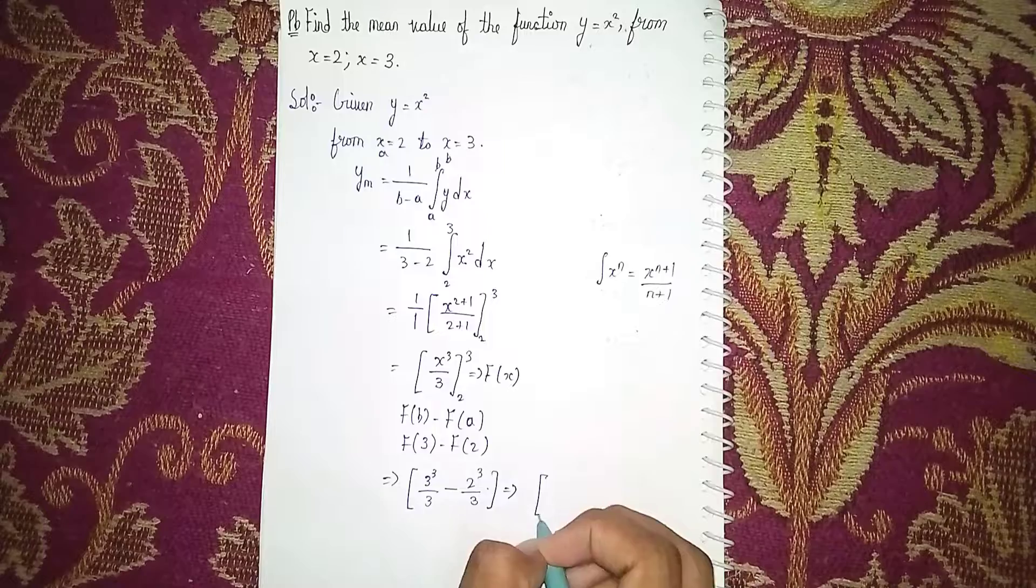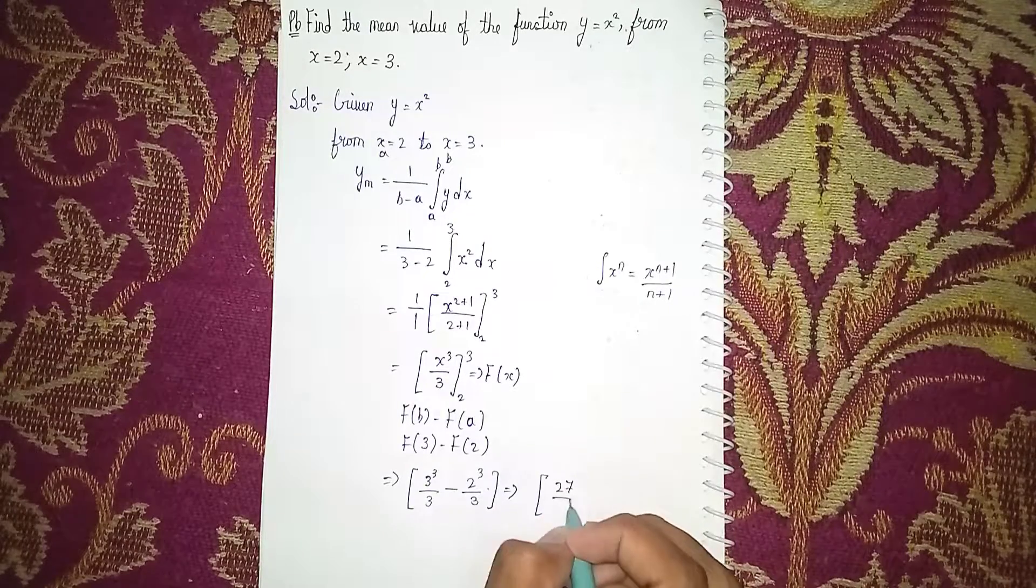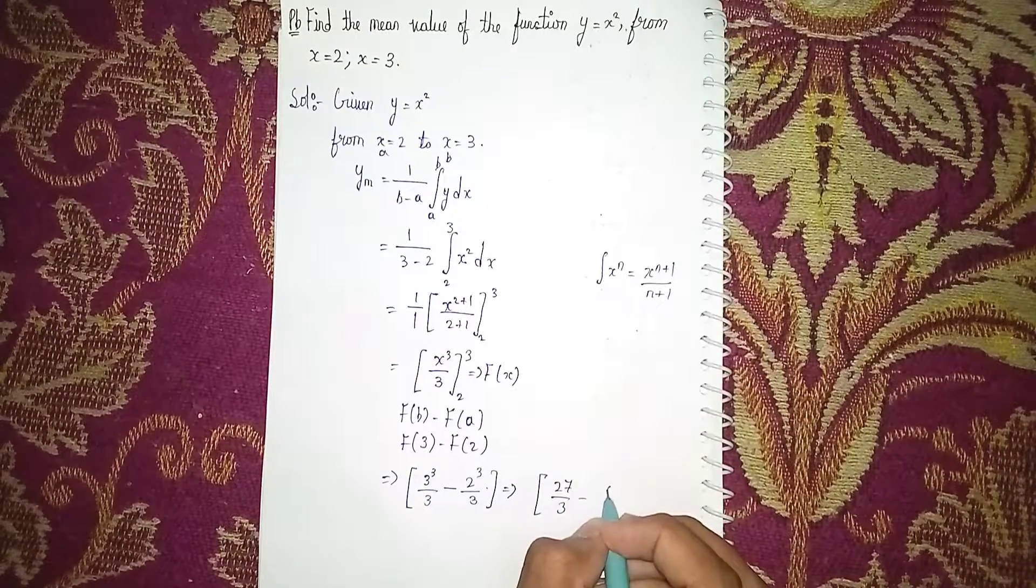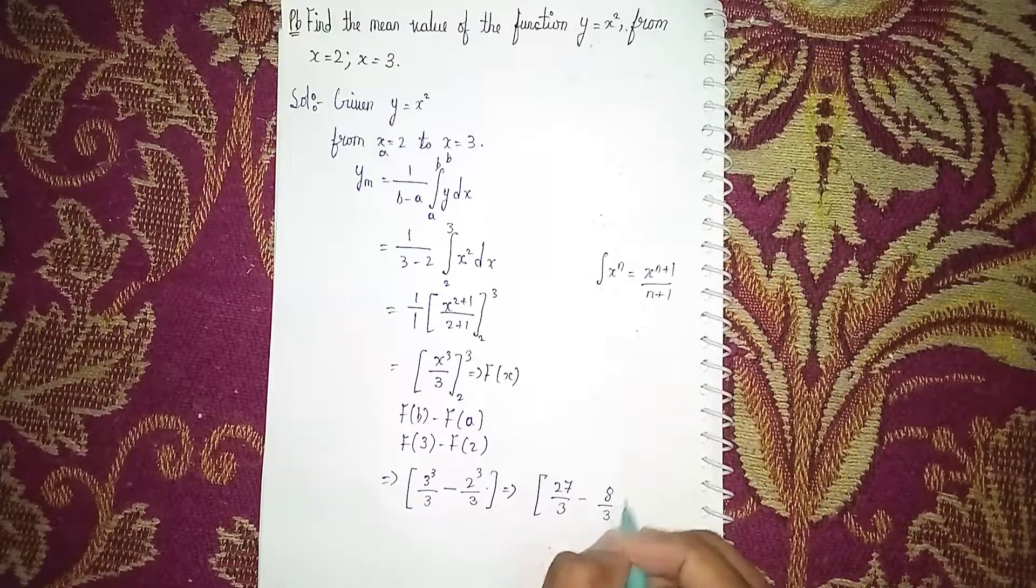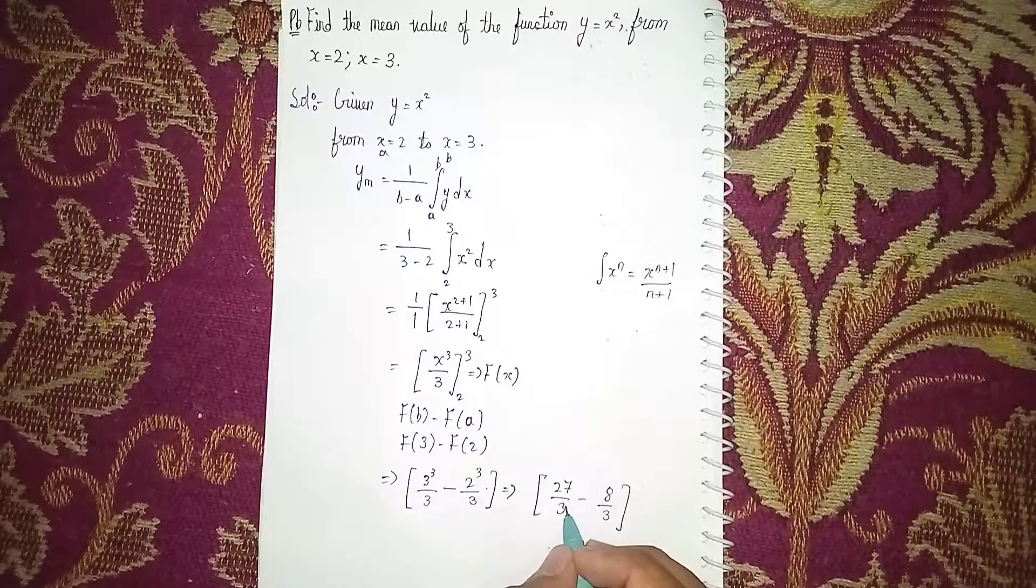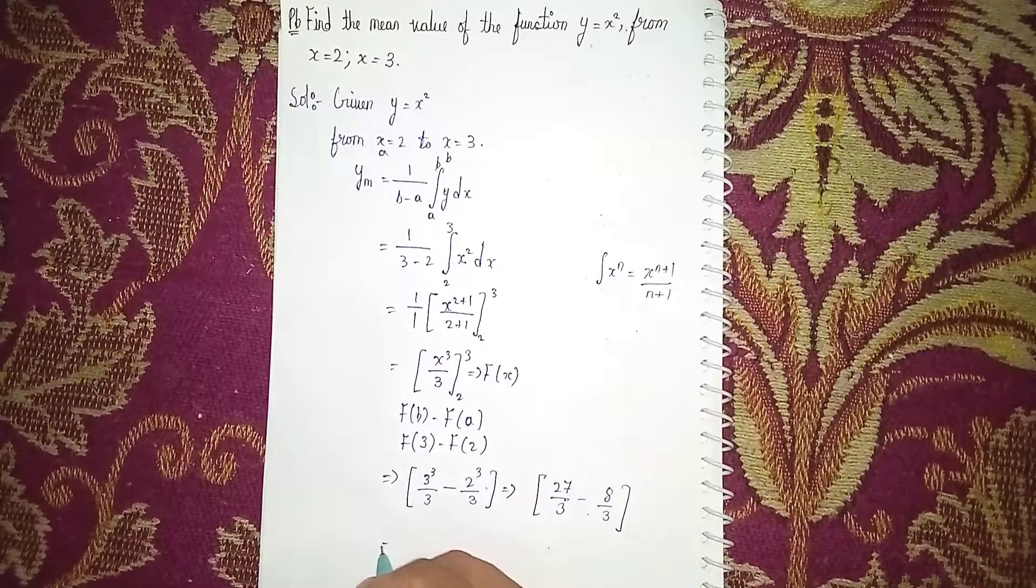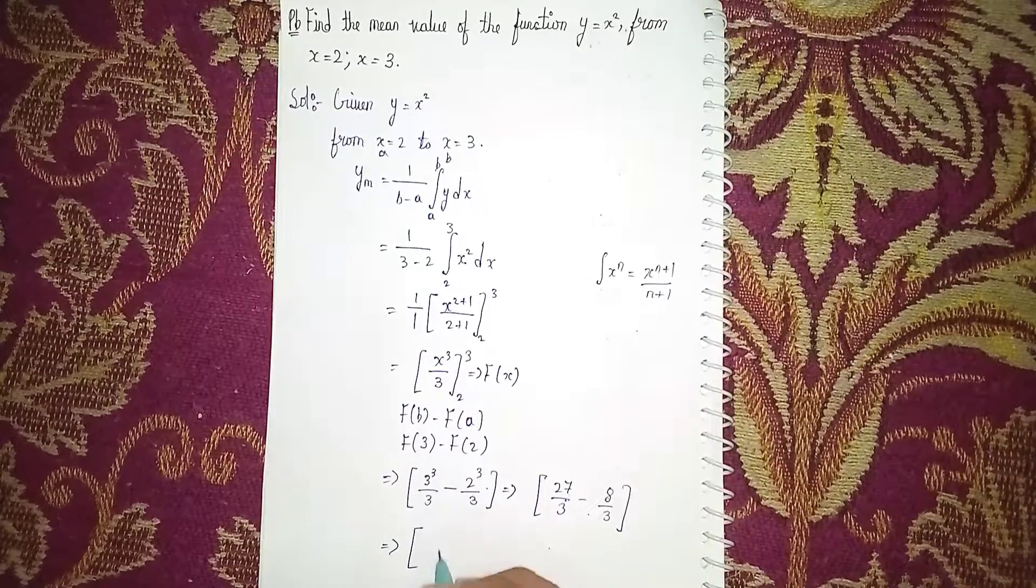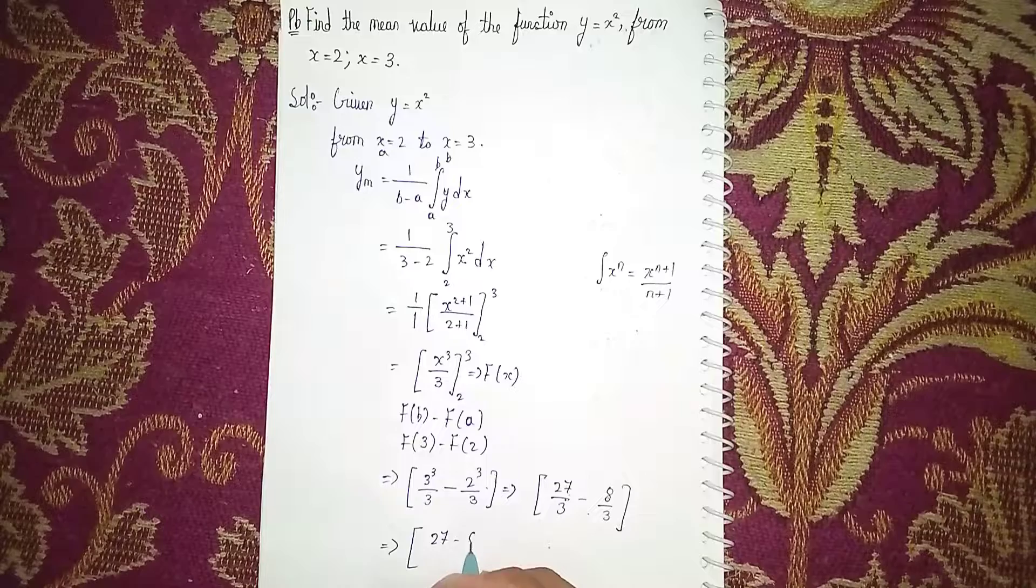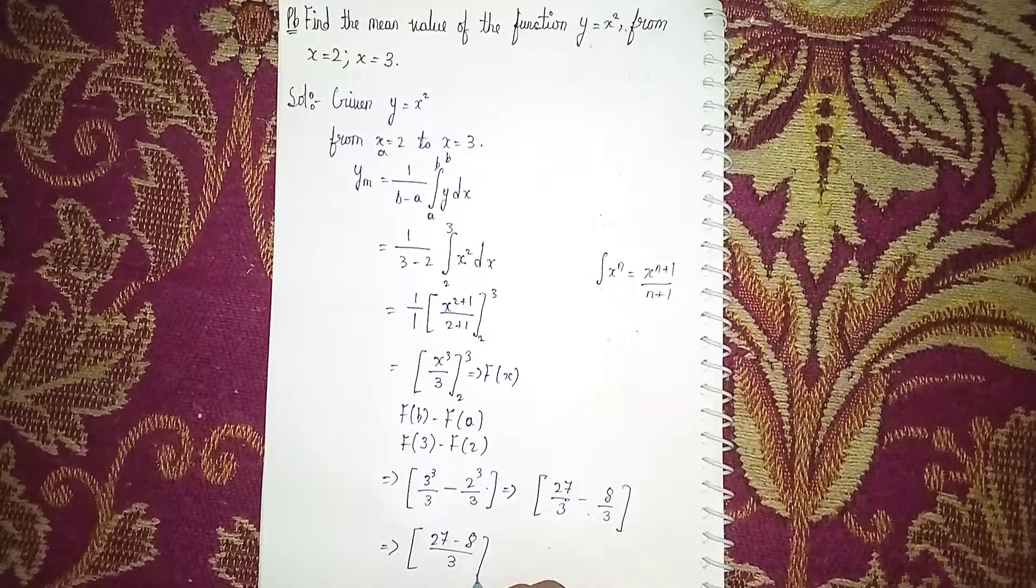3³ = 27, so 27/3 minus 2³ which is 8, so 8/3. The denominators are the same, so subtract the numerators: (27 - 8)/3.